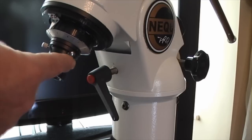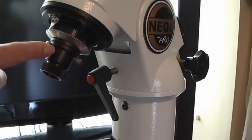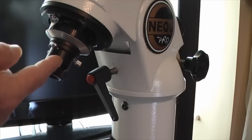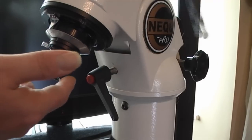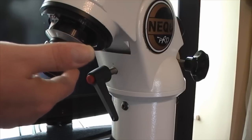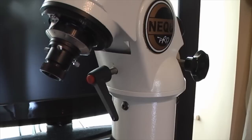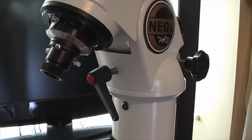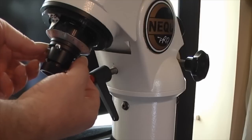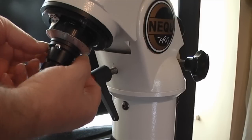Now what we've done is we have small thumb screws in the polar scope that are replacing the grub screws. Now believe me this makes things a lot easier, and the reason being that when you're making an adjustment it's now easy to turn two of these screws at the same time.